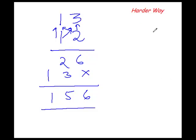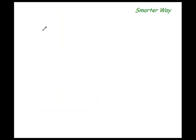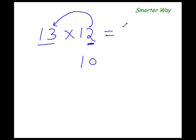So here is your smarter way. The smarter way of multiplying 13 with 12 is the same base method of multiplication that we learnt in the last class. And yes, you guessed it right, the base here is 10. So since 12 is 2 more than the base, add this 2 to this entire number. 13 plus 2 is 15.